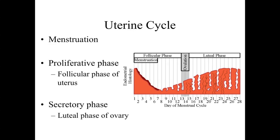Similarly, the uterine cycle runs parallel to the ovarian cycle and is synchronized through the hormones signaling what's going on. If fertilization and implantation don't occur — if the woman doesn't become pregnant — we'll have menstruation and breakdown of the uterine wall. Then the proliferative phase corresponds to the follicular phase of the ovary, when the ovarian follicle is stimulated to produce a mature egg. During the proliferative phase within the uterus, we see essentially a regeneration of the uterine wall, with a thickening as cells are replaced.